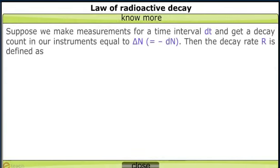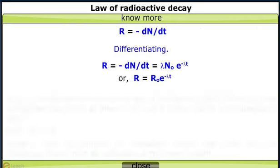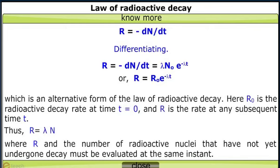Setting t₀ = 0, we get N(t) = N₀ e^(−λt). The total decay rate R of a sample of one or more radionuclides is called the activity of that sample. The SI unit for activity is the becquerel, named after the discoverer of radioactivity, Henri Becquerel. It is defined as: 1 becquerel = 1 Bq = 1 decay per second.